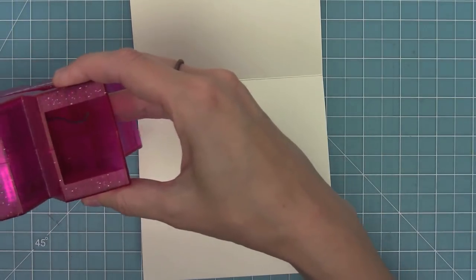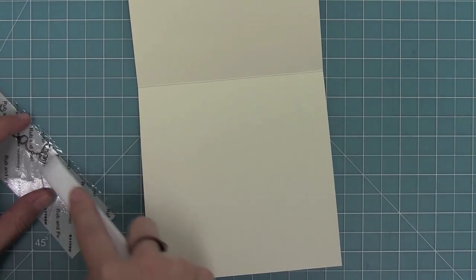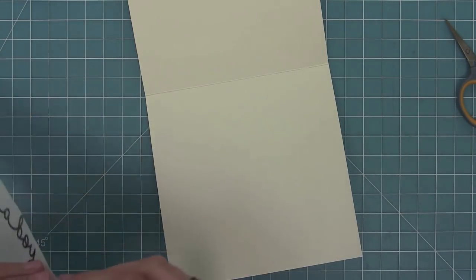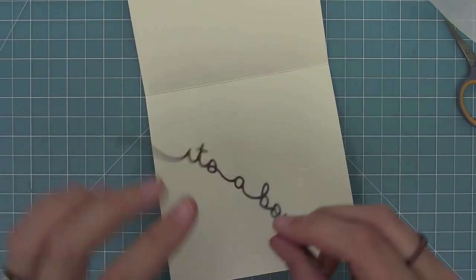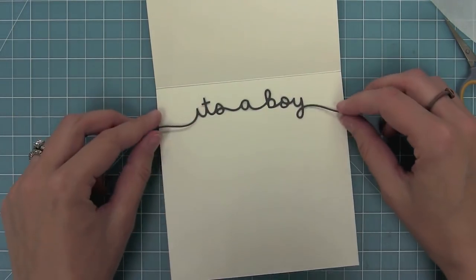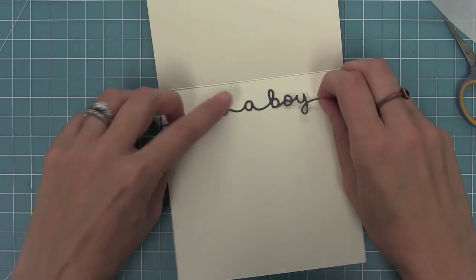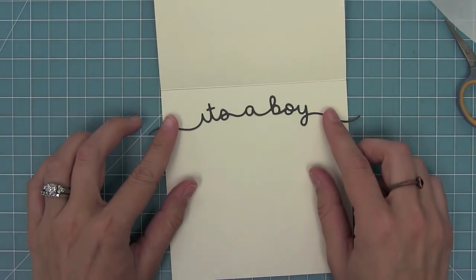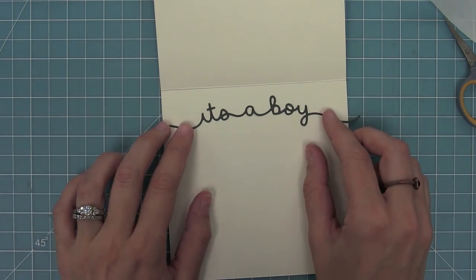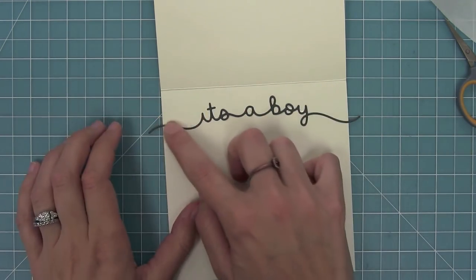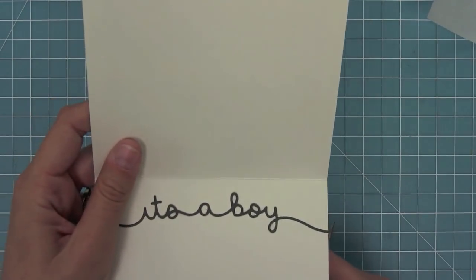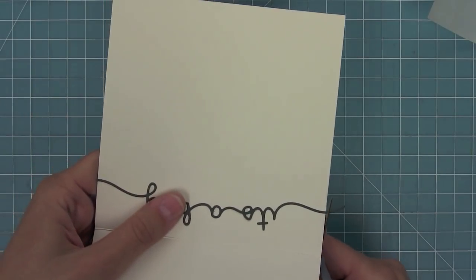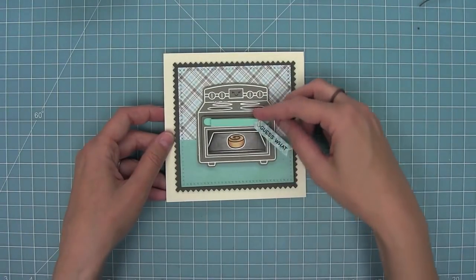I wanted to take my it's a boy die cut and put that on the inside so it would have the guess what, there's a bun in the oven, and on the inside it's going to say it's a boy. I'm cutting from some storm cloud cardstock and ran it through my Xyron sticker maker to add adhesive to the whole back. I'm going to curve that around and I love how it's got that curved area. I'm trimming off those little excess ends. Those border dies are so pretty and that's going to finish off the inside of the card.